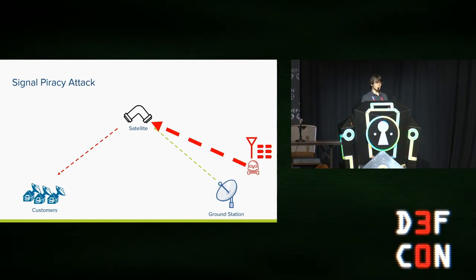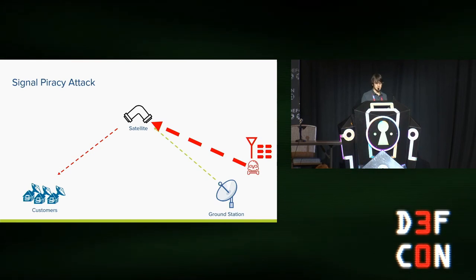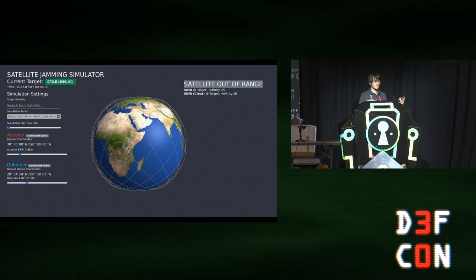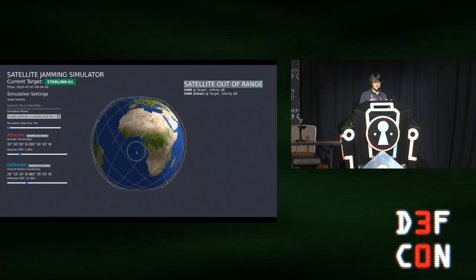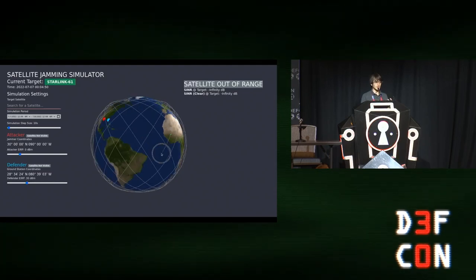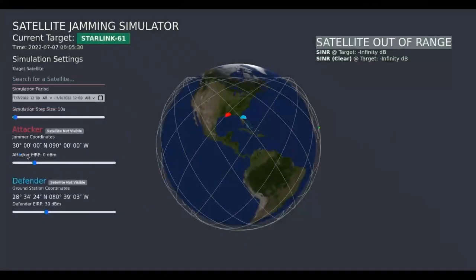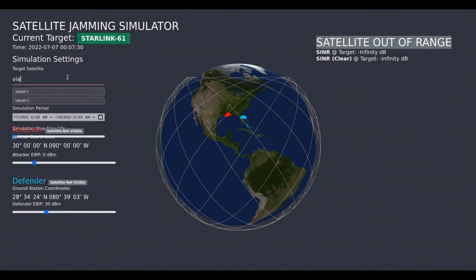So, what does enough power look like in this kind of situation? I've gone ahead and put together a little web tool that you all can actually play with after the conference. There will be a link at the end of the slides to model these sorts of scenarios and see how power interacts with geography in space. So, we've got our model here. We have an attacker antenna and a defender antenna. We can control the power levels of both antennas and their position. And then we can set up our simulation. So, we can pick a specific satellite and see how much power the two antennas could get up to that device.